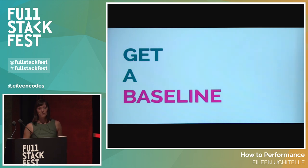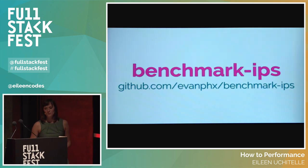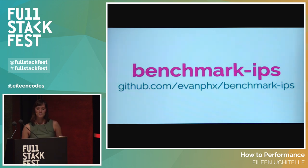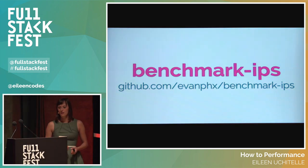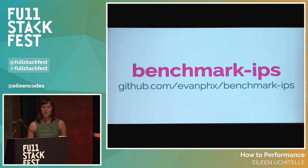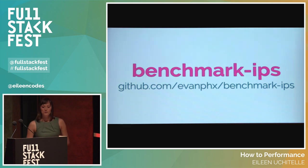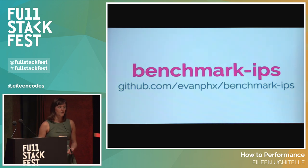A good gem for benchmarking your Ruby code is Benchmark IPS. It was written by Evan Phoenix and the gem measures the number of times the specified code can run in one second. This means that the more iterations, the faster your code is.